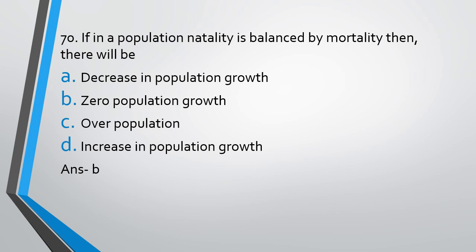Natality means number of new births and mortality means number of deaths. So if the births are balancing the deaths, obviously there won't be any increase in population. When would there be an increase or decrease? Increase would occur when natality has overrated mortality, meaning natality is more than mortality. And decrease in population would occur if mortality is more than natality. If both are balancing each other, no population growth.